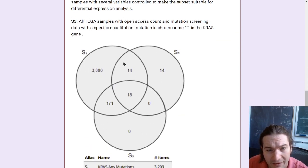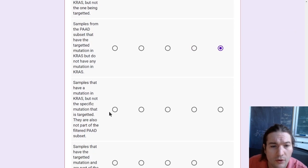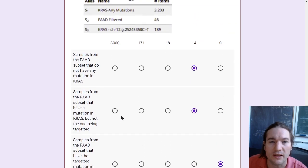Samples that have a mutation in KRAS, but not the specific one, they're also not part of the filtered pad subset. So they have this mutation. So they belong to this. They do not belong to this one. And I can't remember if the question said they have the specific mutation or not. So if they do not have the specific mutation, it's 3000. If they do have it, it's the 171. So the question was, but not the specific mutation. So that would be 3000.